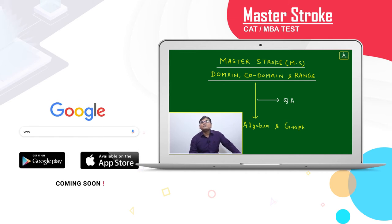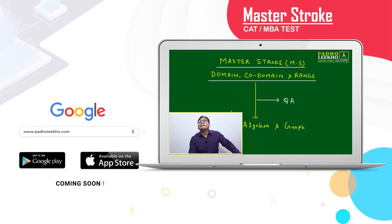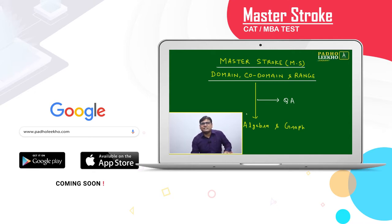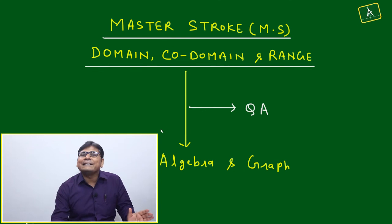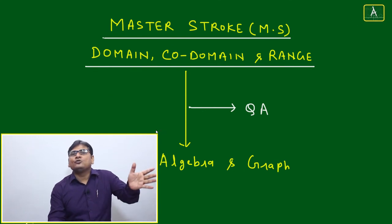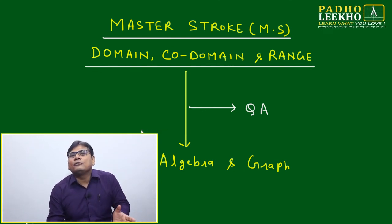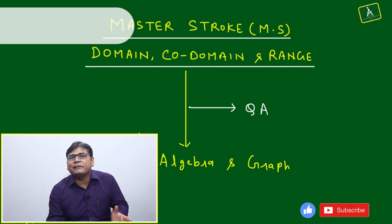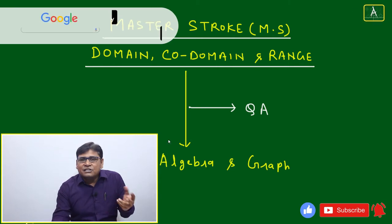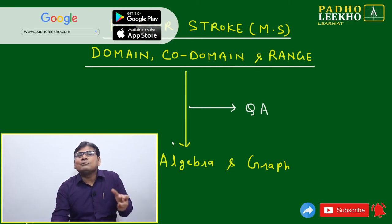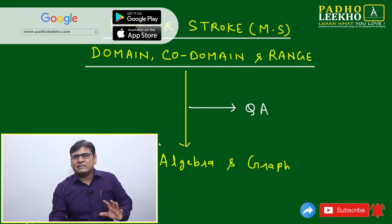Welcome to the master's talk. In this session I'm going to discuss the domain, co-domain and range. Generally many students get confused about what is co-domain and what is the range, because domain is generally clear — it is a set of values of the independent variable — but what is the co-domain and what is the relation between co-domain and range?